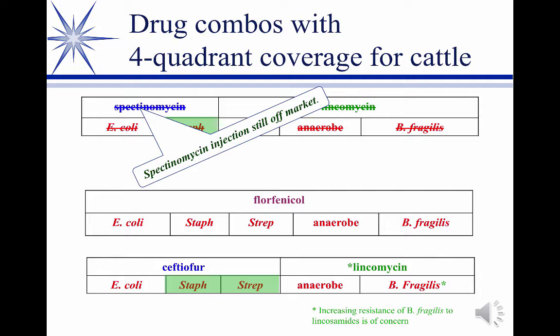Four-quadrant combos. You probably don't care since it's no longer available, but I really liked LS50 — lincomycin and spectinomycin — when it was available. Spectinomycin is off the market, though LS50 is still available as a poultry powder product. Spectinomycin covers E. coli and overlaps on staph; lincomycin also covers staph, streps, anaerobes, and has good — but not absolute — activity against B. fragilis. The reason it's crossed out is you're not supposed to use an antibiotic if there's an approved one available for you, and we have florfenicol.